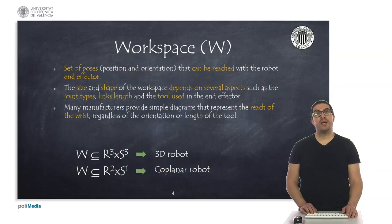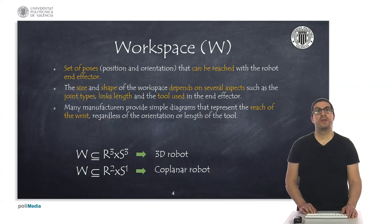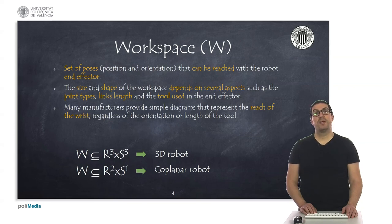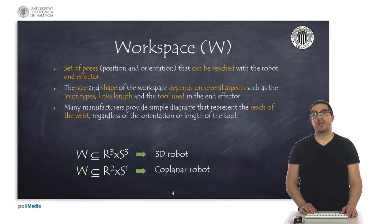On the other hand, the robot workspace is a set of poses, that is, positions and orientations that the end effector can achieve. It is very important to know this workspace since you can only perform movements within it. The problem is that its size and shape depend on the type of joints, the length of the links, the tool used, and many other things, and its computation is not that straightforward.